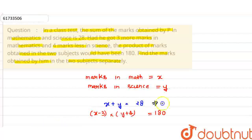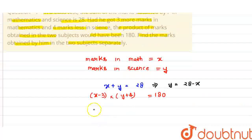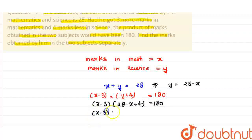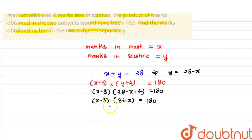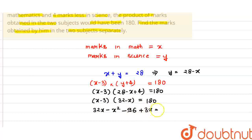If we want to find the value of y, then y equals 28 minus x. So now we substitute: x minus 3, and y equals 28 minus x, plus 4 equals 180. This gives us x minus 3 and 28 plus 4, which is 32 minus x, equals 180.